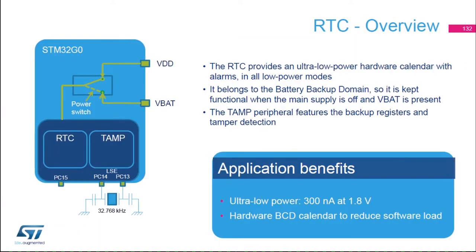Because we're going to use the RTC to wake up the microcontroller, here is a quick overview of the real-time clock. The RTC peripheral features an ultra-low-power calendar with alarms, which runs in all low-power modes. When clocked by the low-power external oscillator — the LSE at 32 kHz — the RTC is functional even if the main power is off, when the VBAT domain is supplied by a backup battery. The RTC consumes only 300 nA at 1.8 V including LSE power consumption. The hardware calendar is provided in BCD format, which reduces the software load when date and time must be displayed.